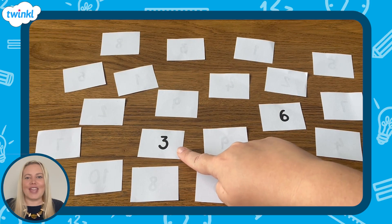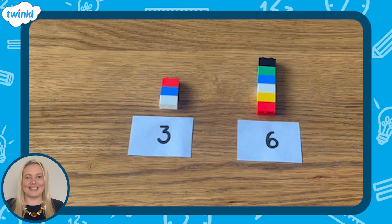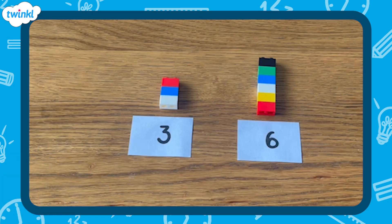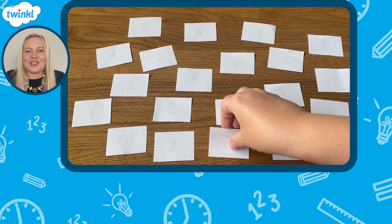I've turned over 3 and 6. I'm going to represent the numbers using toy bricks. The towers of bricks show the value of the two numbers I turned over. I can see that 6 is greater than 3 and 3 is less than 6. I can also write statements using the less than and greater than symbols to show what I've found out. Let's have another go.